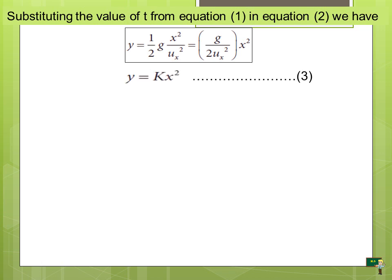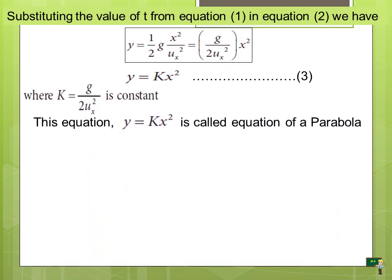Substituting the value of t from equation 1 into equation 2, we have y = ½g(x²/ux²), which can be written as y = (g / 2ux²) × x². Taking k = g / 2ux² as a constant, we get y = kx², which is equation 3. This equation y = kx² is called the equation of a parabola.